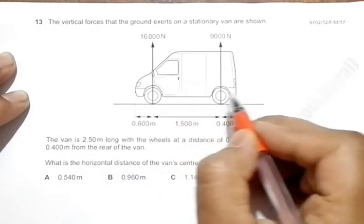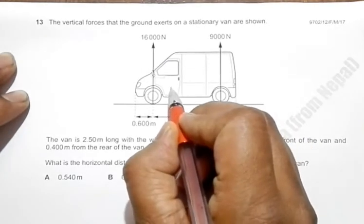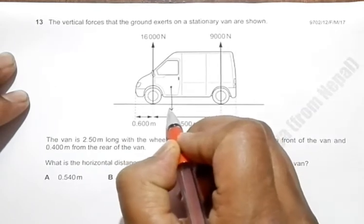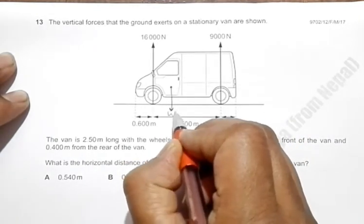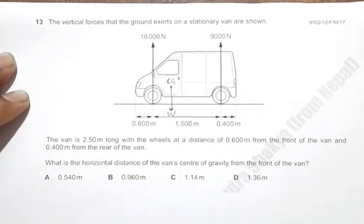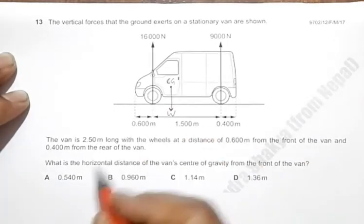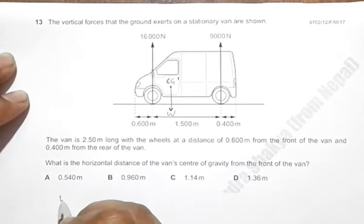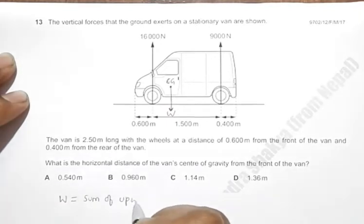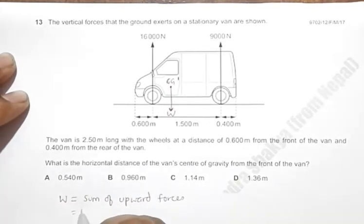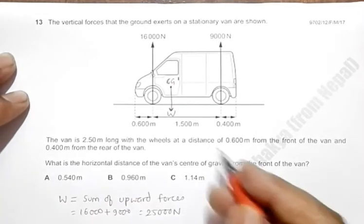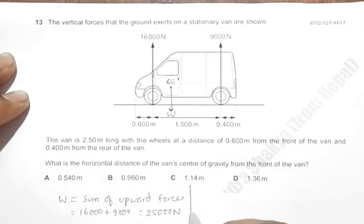Let us suppose that the center of gravity of the van is somewhere here. This is the overall weight of the van acting here. Since the van is vertically balanced, we must have W numerically equal to the sum of upward forces. That means it should be equal to 16,000 plus 9,000, which equals 25,000 Newtons. So the weight of the van is 25,000 Newtons.